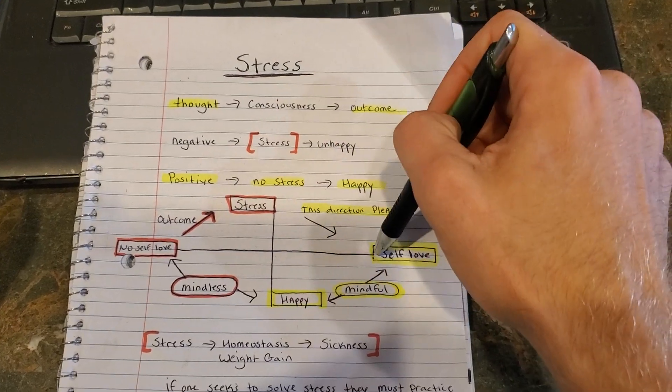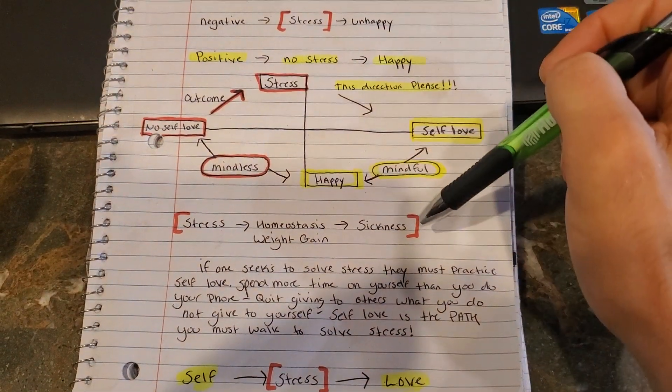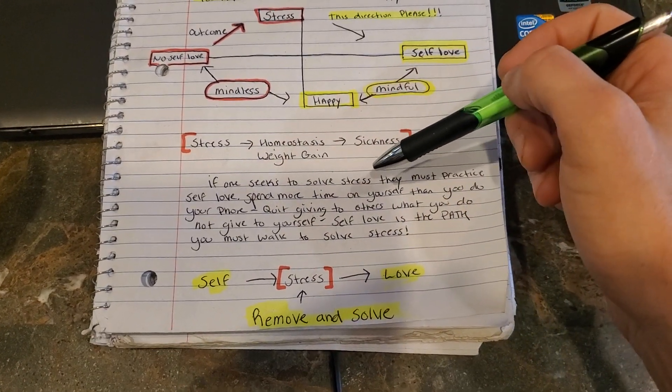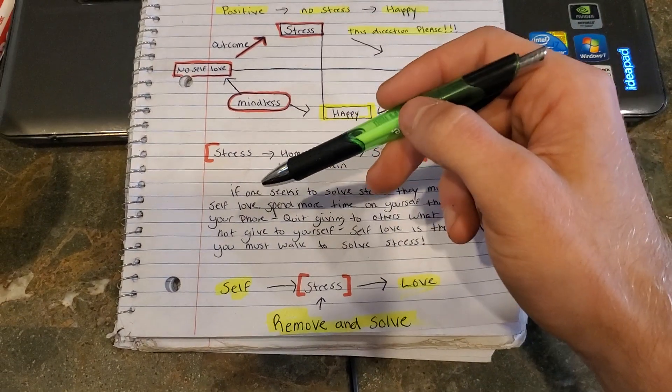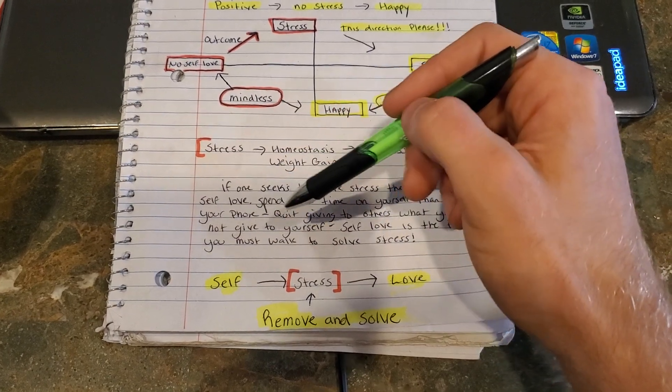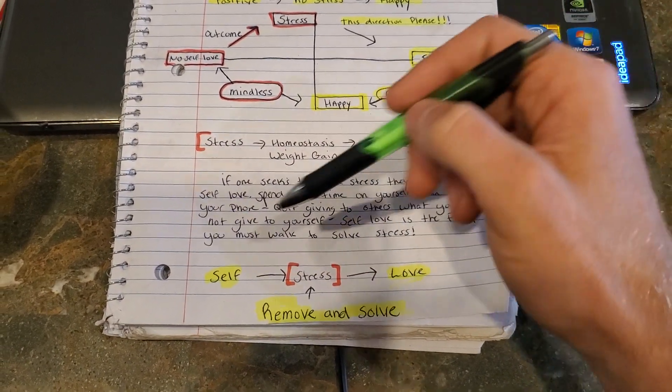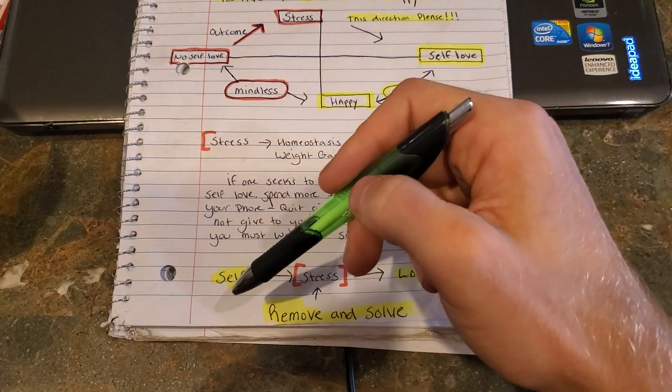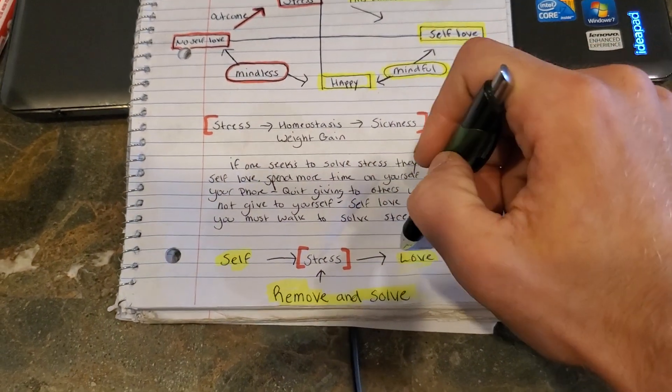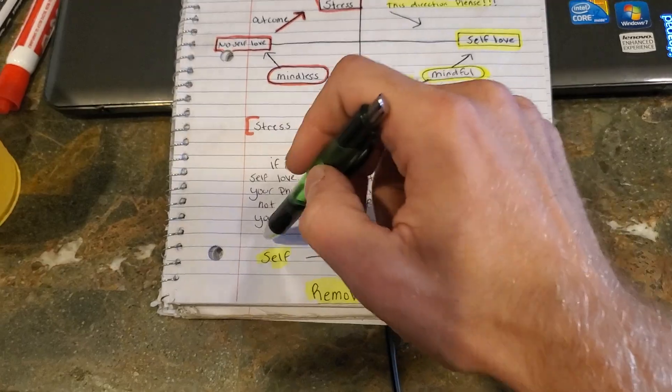So like I said, stress alters your homeostatic mechanisms, which can lead you to being sick and gaining weight. So if you seek to solve stress, practice self love. Spend more time on yourself than you do others. Spend more time than you do on your phone. Quit giving to others what you do not give to yourself. Self love is the path you must walk to solve stress. So you can see right here, if you have yourself, you have stress in the way, you're not going to be able to find the love and everything that you want to find. So when you remove stress, you can solve the problem with self love.